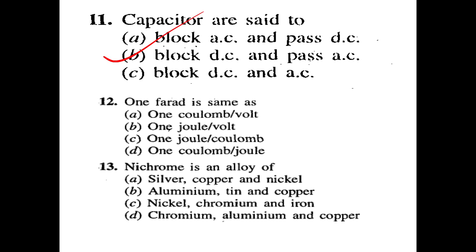Question 14: 1 farad is the same as 1 coulomb per watt, 1 joule per watt, 1 joule per coulomb, or 1 coulomb per joule? Answer: 1 farad is the same as 1 coulomb per volt. Question 11: Nichrome is an alloy of silver, copper, nickel, aluminium, or nickel-chromium-iron? Answer: Nichrome is an alloy of nickel, chromium, and iron.